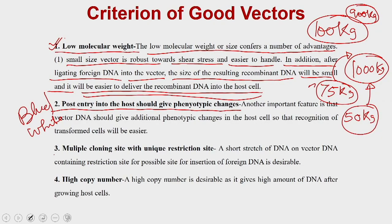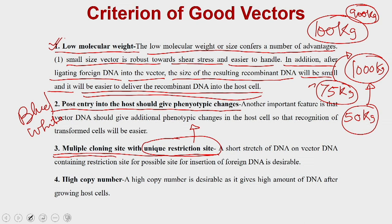The third important property is that a good vector should have multiple cloning sites with unique restriction sites. A unique restriction site means these restriction sites are not repeated within the body of the particular vector. The multiple cloning site is the location where you can choose restriction sites to insert your foreign DNA.